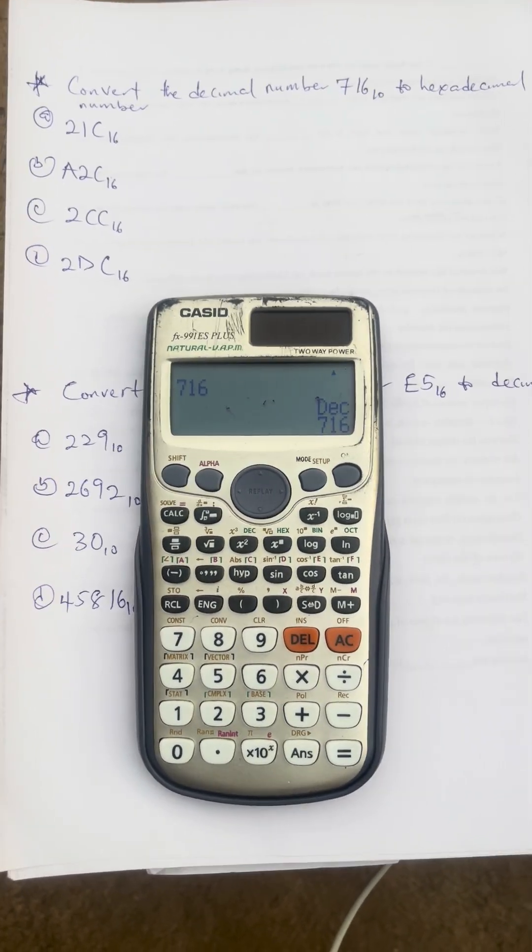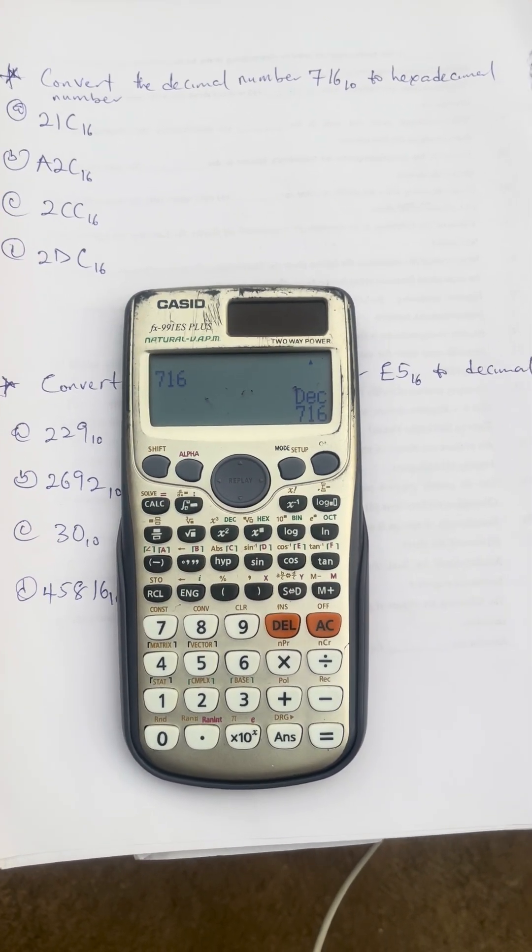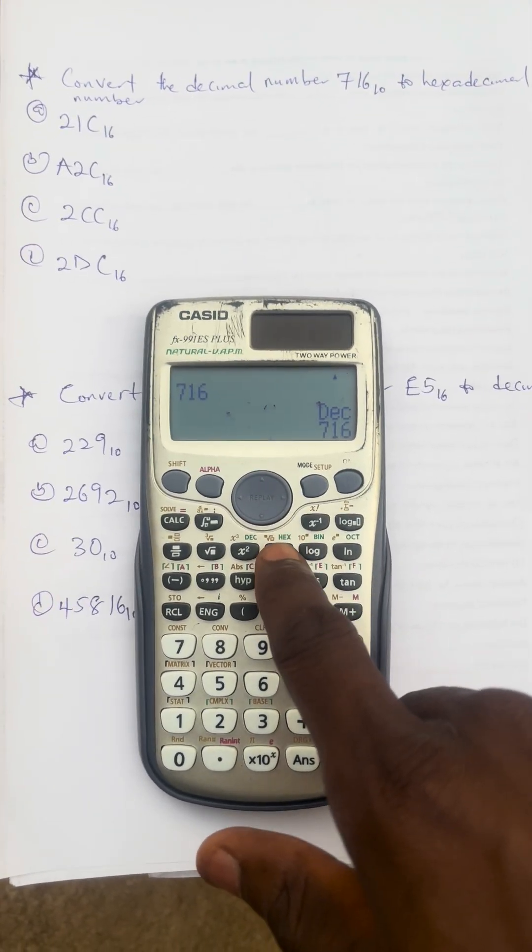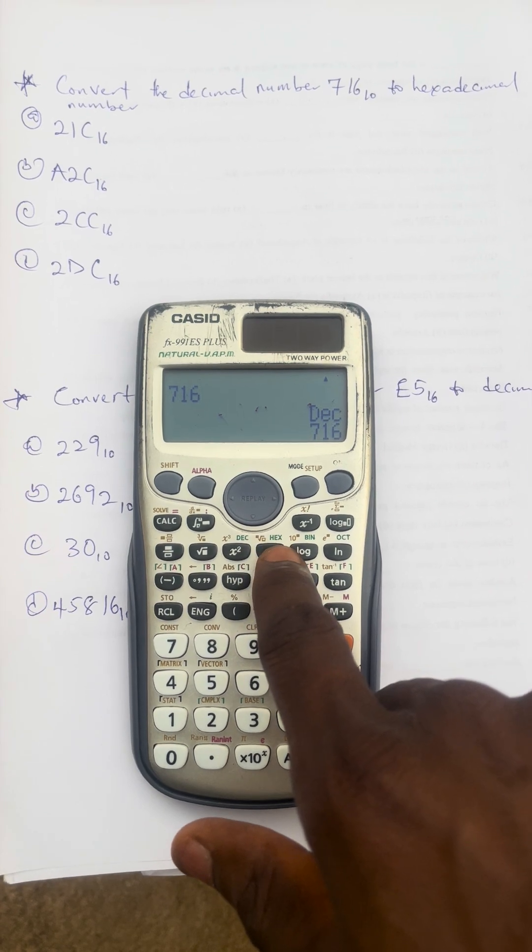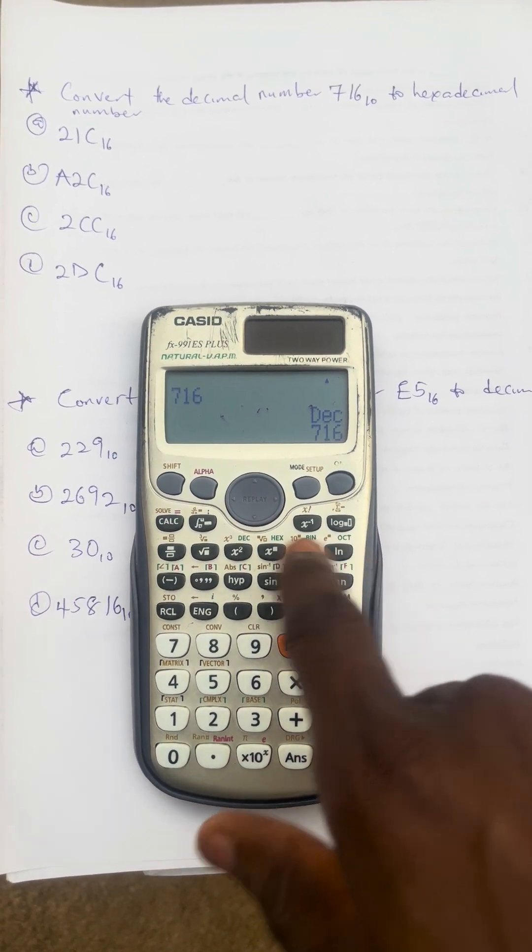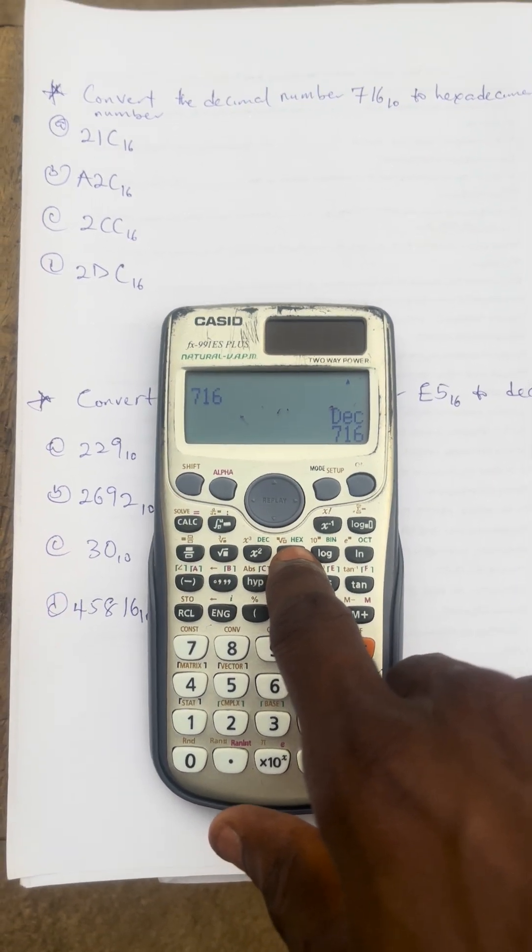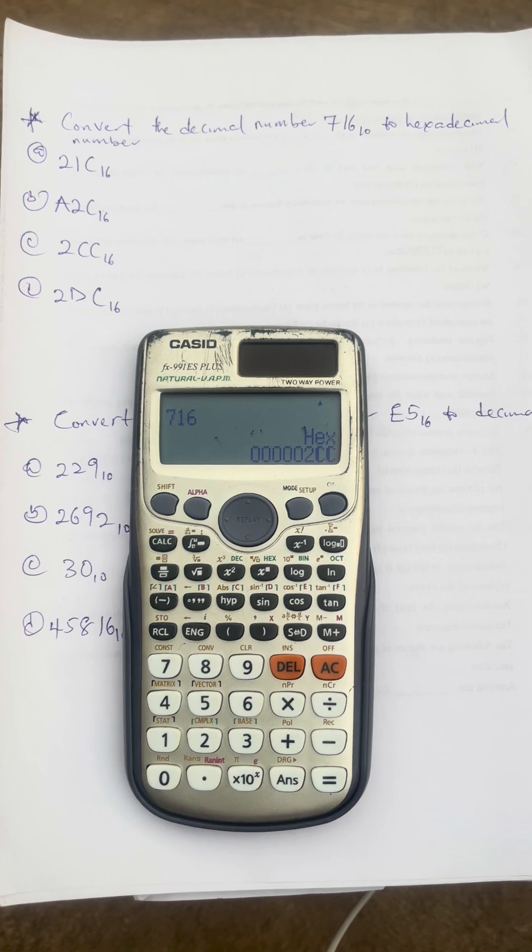We have to convert 716 so you have to press equals to. You make sure that it shows in that decimal. Now convert, you take it to the hexadecimal. You want to take it to hexadecimal. The button is this, you see X here, you see DEC here, you see BIN here, you see OCT here. This is X, you don't need to press alpha or shift, just press the button.